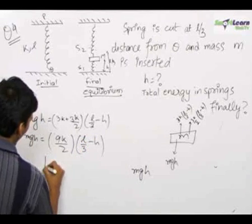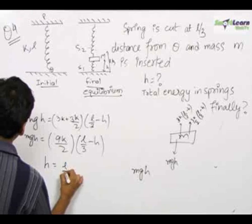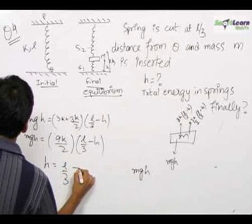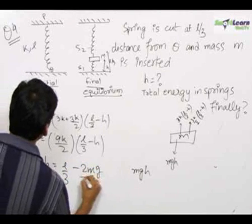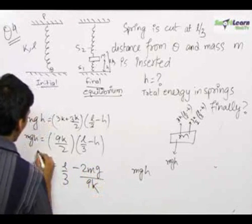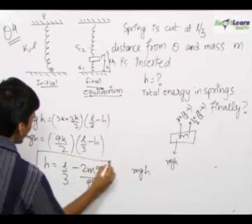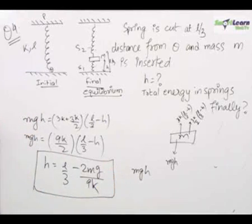Solving this equation, we get h = L/3 − 2mg/(9k). So we have the answer for h.